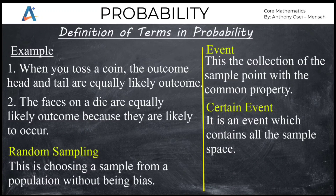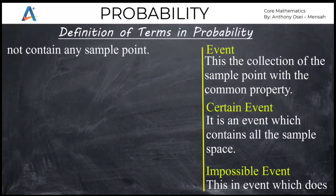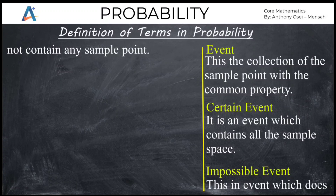The next type of event is the impossible event. An impossible event is an event which does not contain any sample points. The event becomes impossible if after everything you do, you don't see any result or sample point. If no sample point or outcome is shown after the event is performed, it becomes an impossible event.